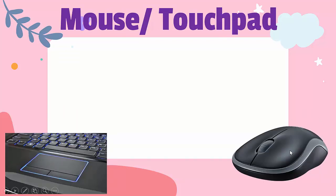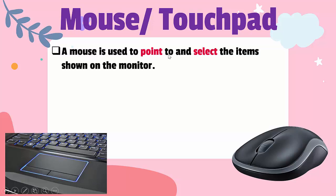Now the next part is the mouse or a touchpad. When we are using a desktop computer, we use a mouse to operate it. But in laptops, there is a small touchpad present on it, so in a laptop we operate using the touchpad. Whereas when we use a desktop computer, we operate using a mouse. A mouse is used to point to and select the items shown on the monitor.